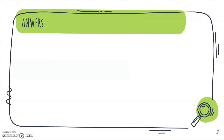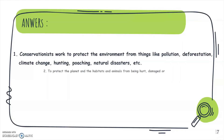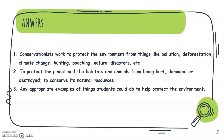Here are the answers. Number one: conservationists work to protect the environment from things like pollution, deforestation, climate change, hunting, poaching, natural disasters, and so on. Number two: to protect the planet and habitats and animals from being hurt, damaged, or destroyed, and to conserve natural resources. Number three: any appropriate examples of things students could do to help protect the environment.